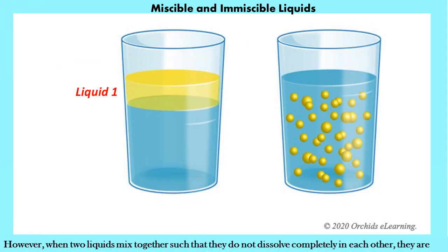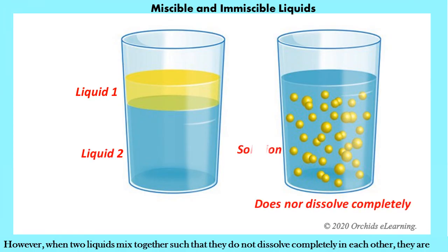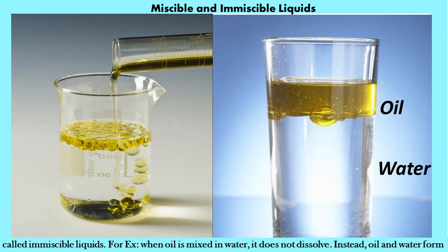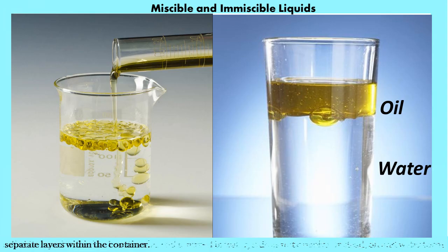When two liquids mix together such that they do not dissolve completely in each other, they are called immiscible liquids. For example, when oil is mixed in water, it does not dissolve. Instead, oil and water form separate layers within the container.